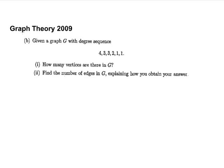This Graph Theory question from 2009 is a short question covering the basics of working with graphs, and in particular the degree sequence. Given that graph G has degree sequence 4, 3, 3, 2, 1, 1, how many vertices are there in G?